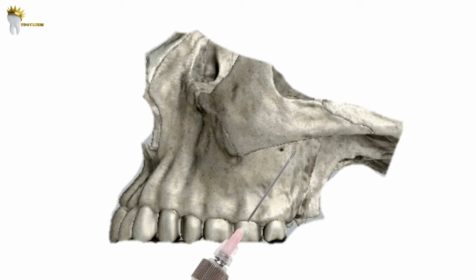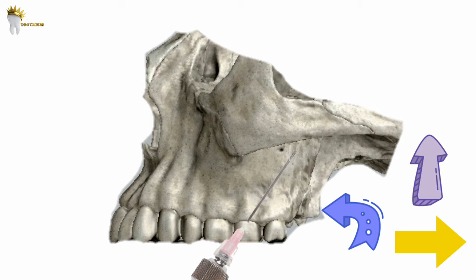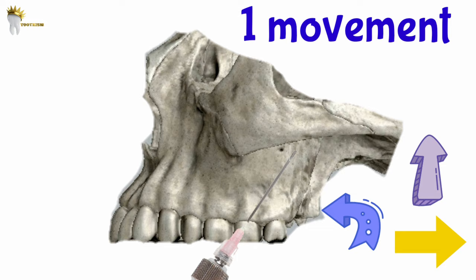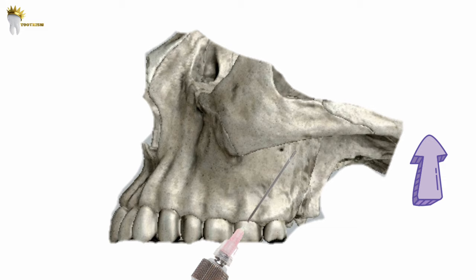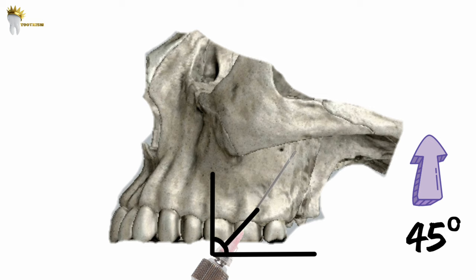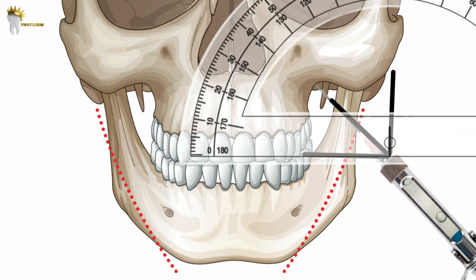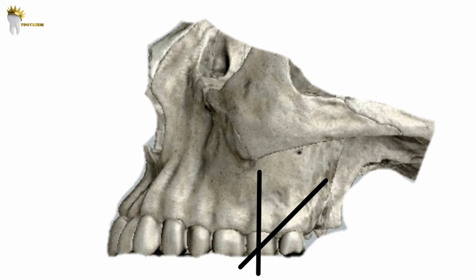Needle direction is very important. The needle is advanced in an upward, inward, and backward direction — not three separate movements, but one combined movement. The angle for all three directions is 45 degrees: 45 degrees to the occlusal plane in the upward direction, 45 degrees to the occlusal plane in the inward direction, and 45 degrees to the long axis of the second molar posteriorly. The ideal needle direction must be achieved in one single movement; once the needle is in the tissues it should be slowly advanced.